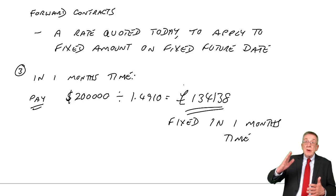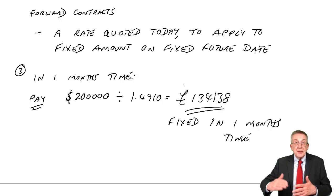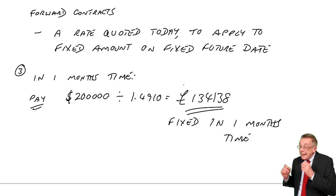The actual rate in a month's time may be better, may be worse, but if we haven't done anything, it's risk. We may gain, we may lose. Here, I'm guaranteed I'll pay exactly 134,138 pounds. There is no risk, it's certain.